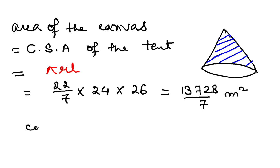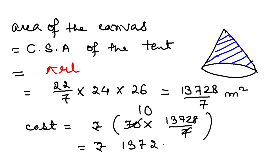I have to find the cost also. Per meter square cost is rupees 70. So total cost will be 70 into this much, 13728 by 7. This becomes 137280. So this is the cost of making the tent out of the canvas.